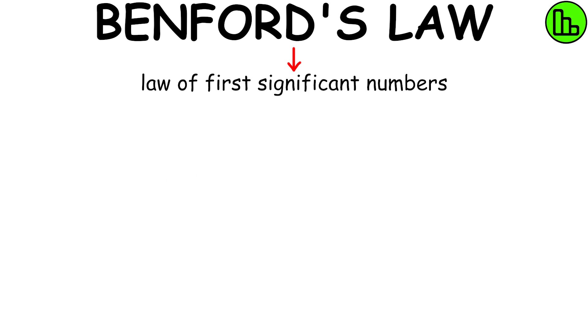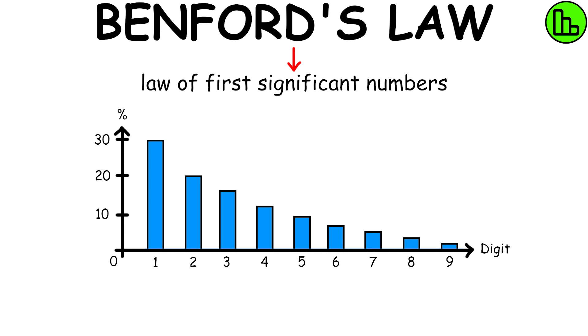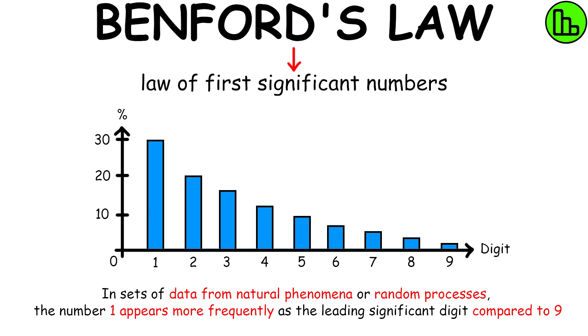Benford's Law, or Law of First Significant Numbers, describes the probability distribution of the first digits in many instances of real data collections.